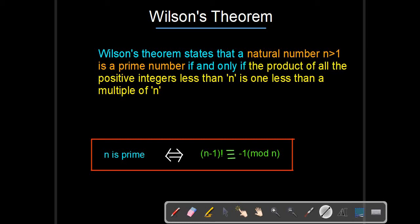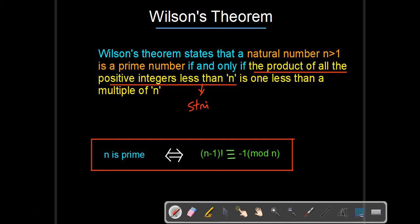The most important thing here is: the product of all the positive integers less than n — less than n means strictly less than n — is 1 less than a multiple of n.